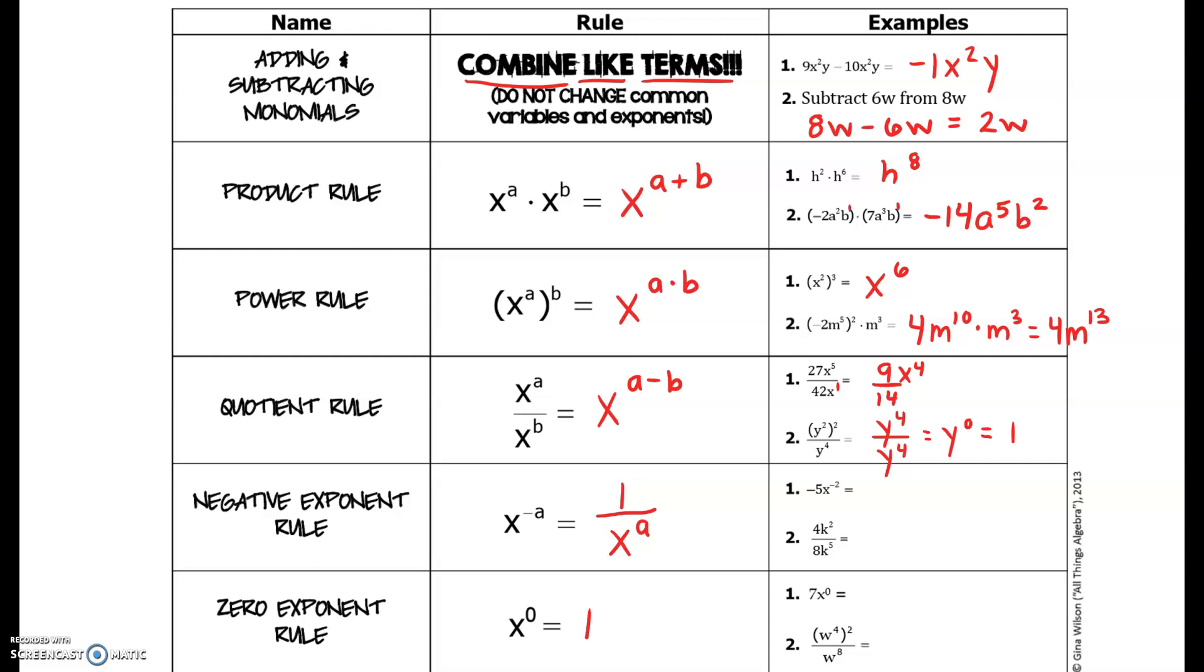Now the negative exponent rule: you do not change the location of the coefficients, so negative five is going to stay on the top. But the negative exponent has to turn positive, so we move that to the bottom of our fraction and make the two positive.